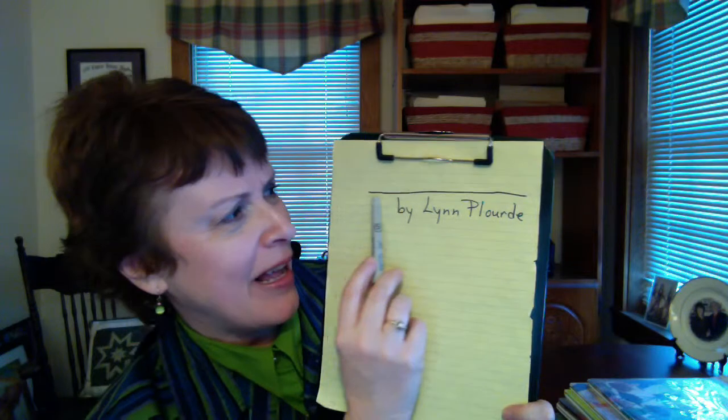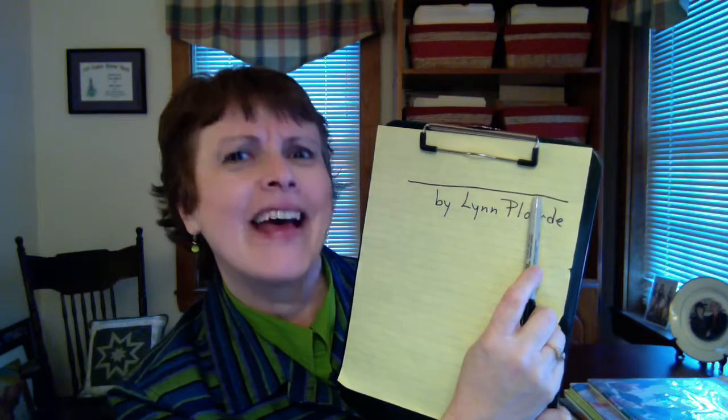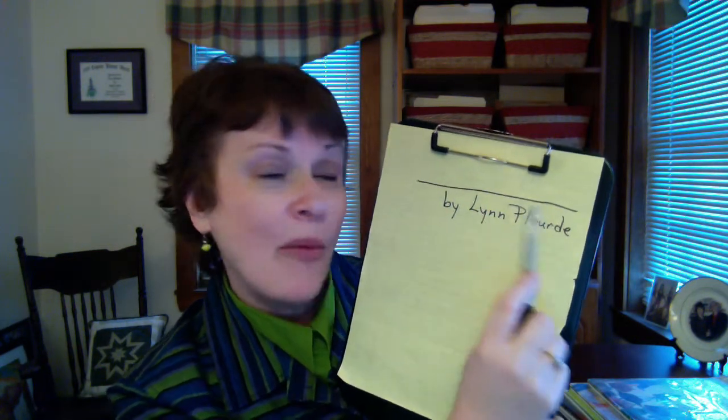Welcome back to Make Writing Visible. I have a stack of books because today we are talking about what would go on this line. If you were writing a story, what would go on that line? The title. And then you'd have who it's by. So I want to talk about titles today.